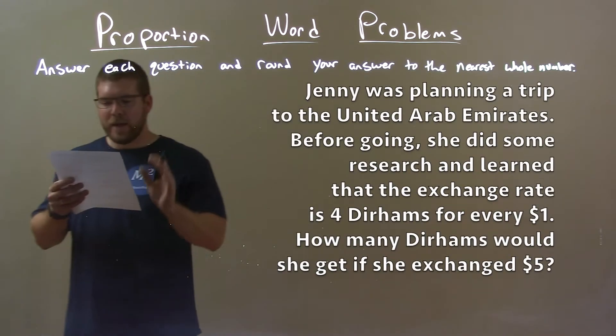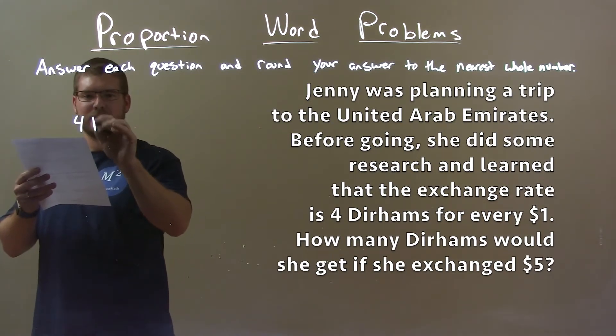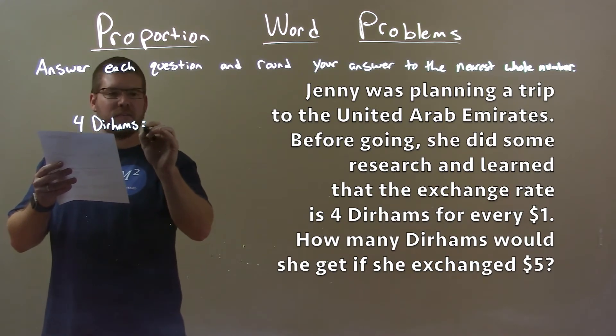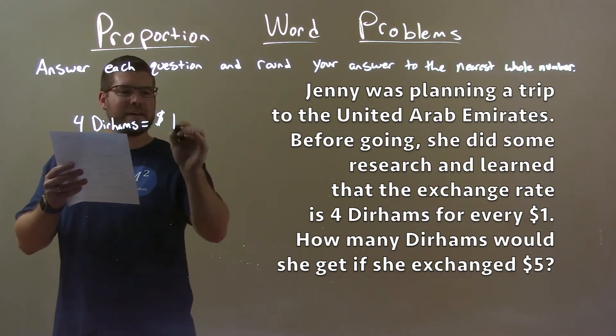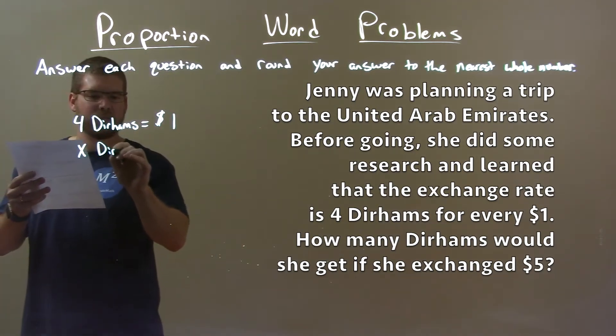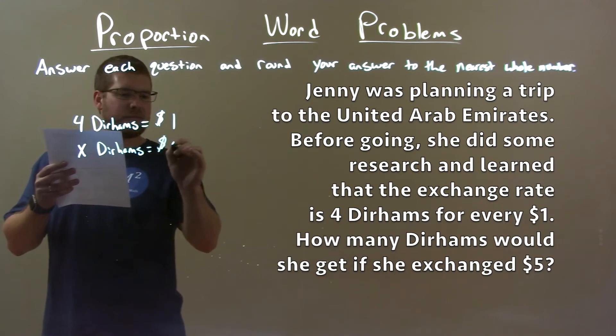So, what do we have here? We know that 4 dirhams is equal to $1. How many dirhams, let's say x dirhams, would get her $5?